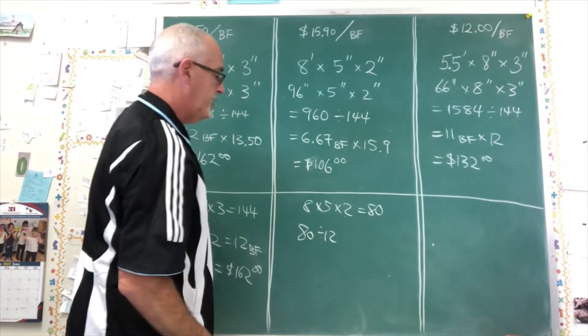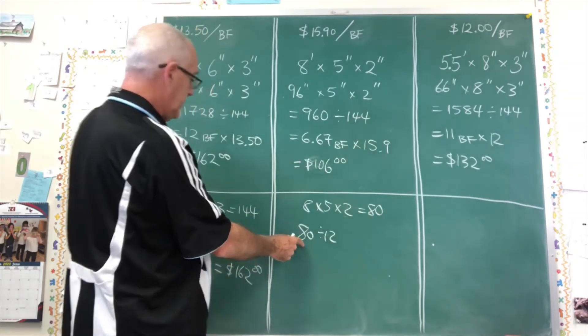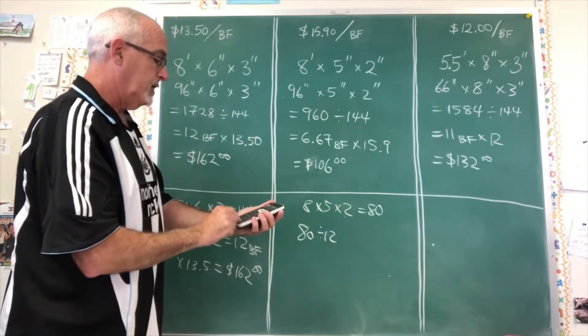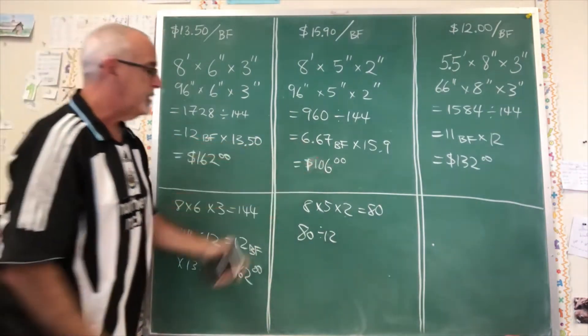I am dividing 80 by 12, not by 144. And I am going to get 6.67. Yes, I am. I'll do it in the calculator. 80 divided by 12, 6.67. Of course, I'm getting 6.67. That's what I got here.